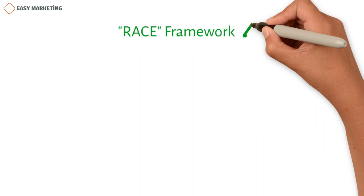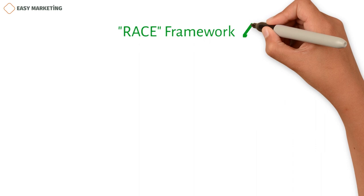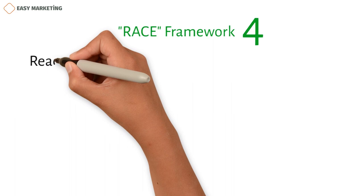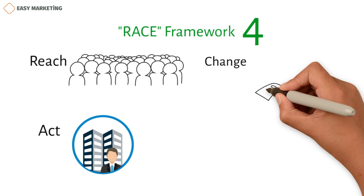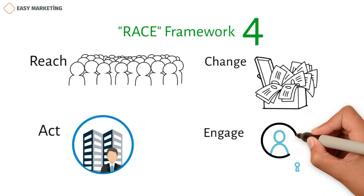Summarizing: The RACE framework is a model with four steps that can be used to make marketing campaigns. Its name is an acronym for the four steps: Reach — the company must reach out to the customer; Act — the corporation needs to do something; Convert — the business must make money; and Engage — the firm needs to get customers to stick with it.